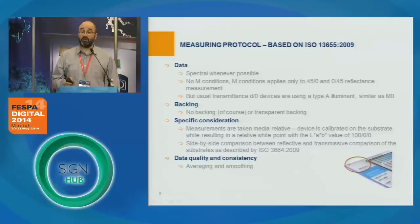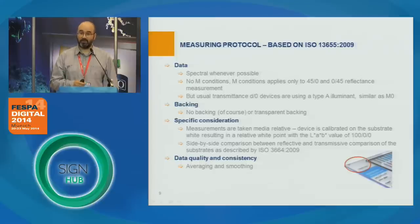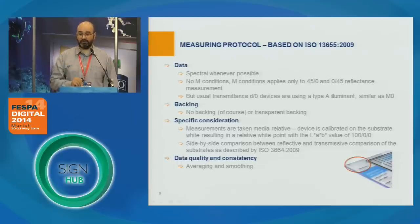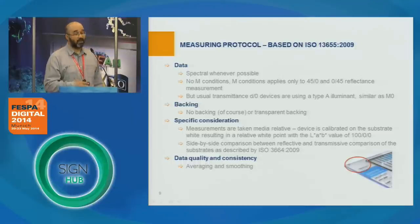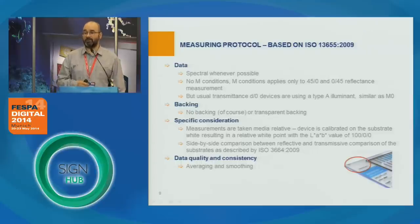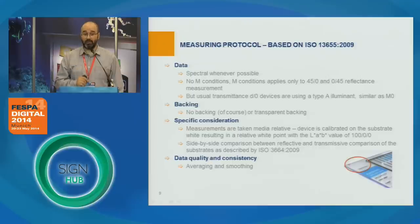From the point of view of comparison between reflective and transmission reproduction — for example, like having a contract proof and your backlit reproduction — we may have some problems when we put side-by-side a reflective proof with the transmission application. These need to be evaluated, and there are some restrictions that apply to this kind of comparison. Our protocol also needs to include some averaging of the data in order to compensate for variation in the measurement protocol or the uniformity of the area we are measuring.